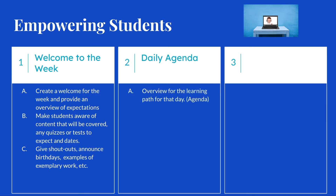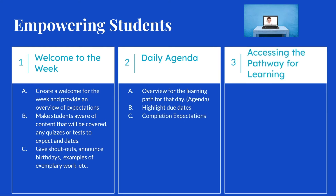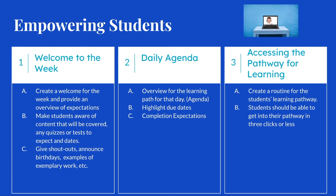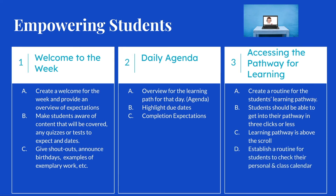For your daily agenda, this is the overview for the learning path for that day. It describes the blended learning expectations students will have and highlights things that are due and the completion expectations. Accessing the path is very important — create a routine for the students' learning pathway. It's easy to develop click fatigue, so make sure students can get into their learning pathway in about three clicks, and keep the learning pathway above the scroll so students don't have to keep scrolling. Also establish a routine for students to check their personal and class calendar to help improve their executive functioning.